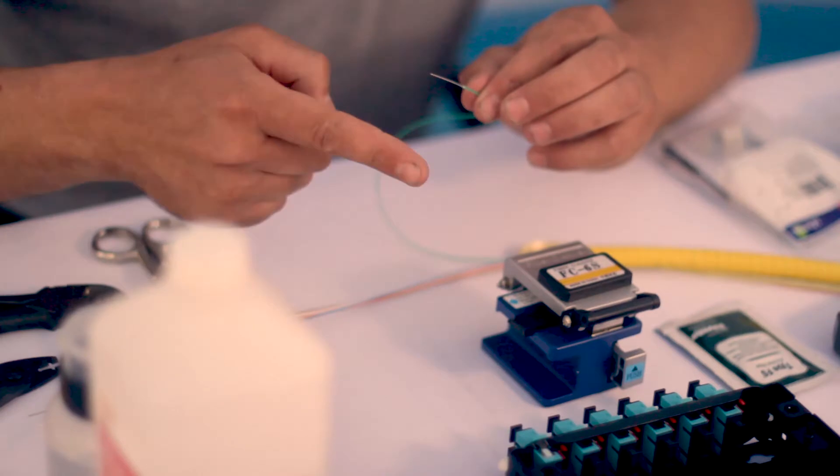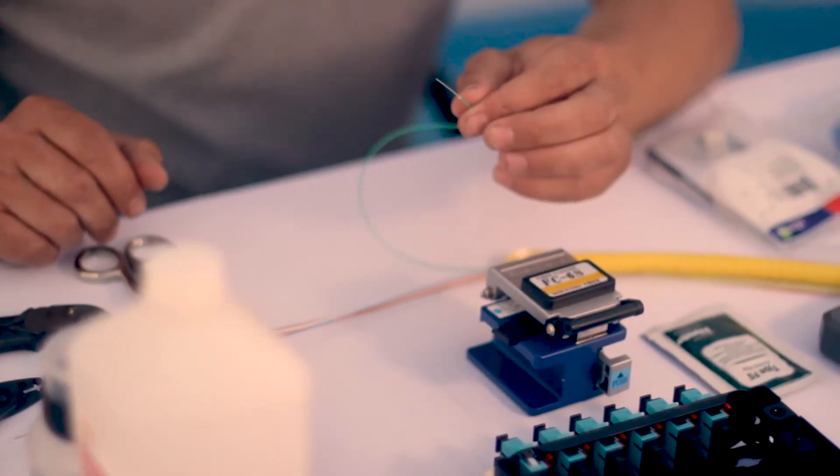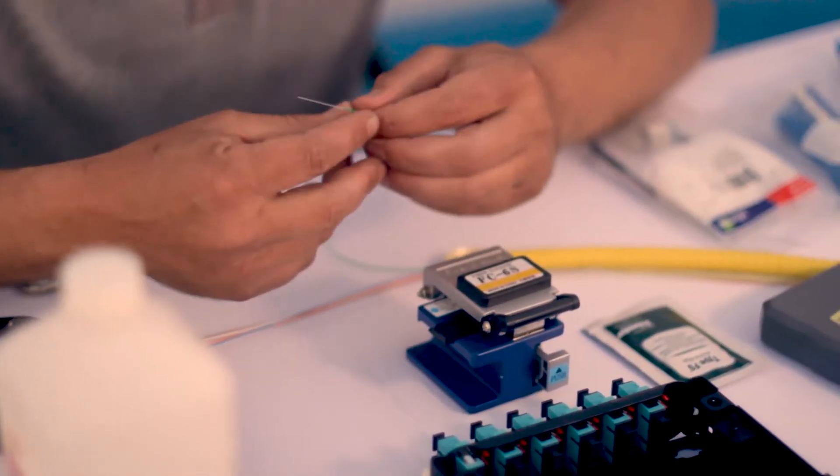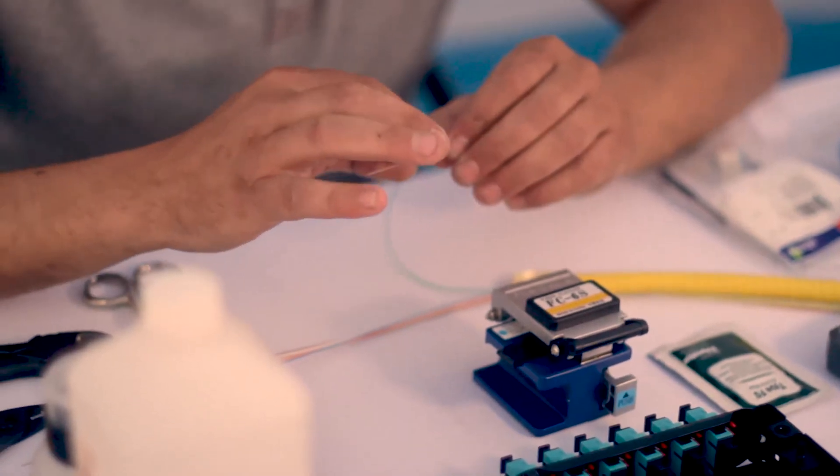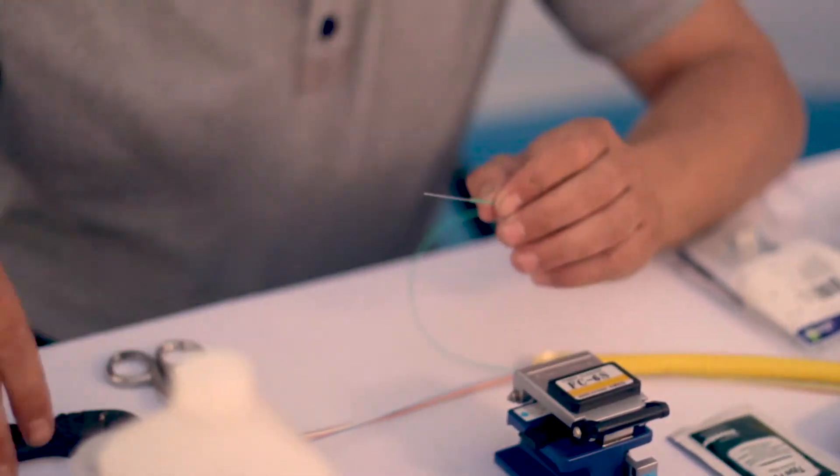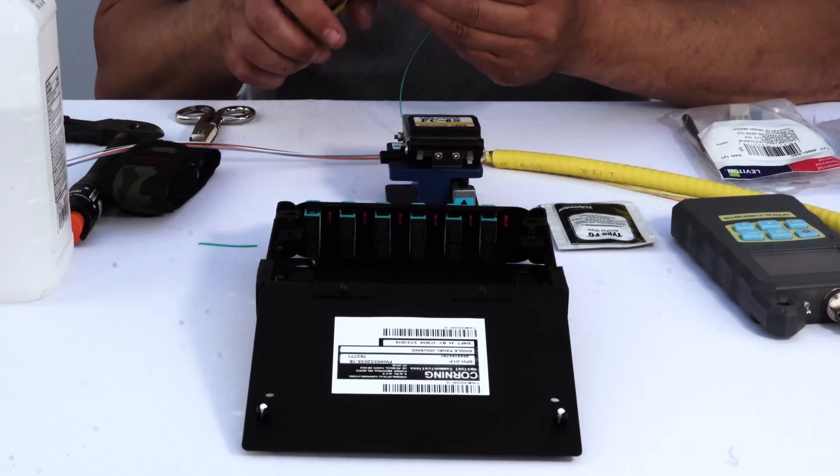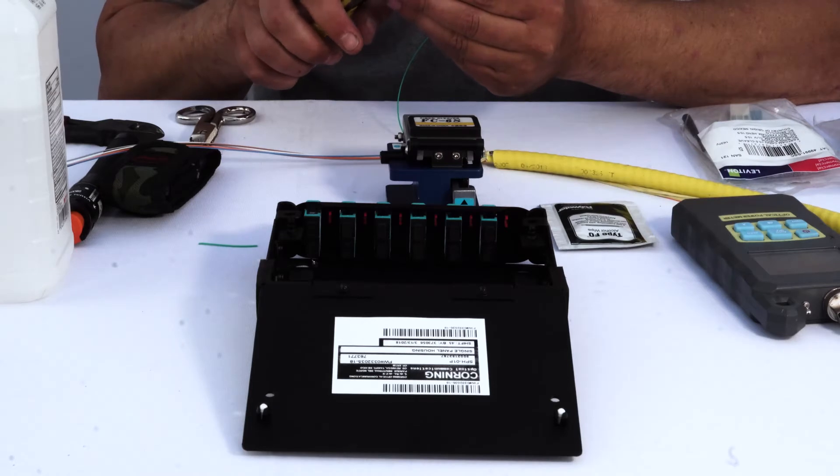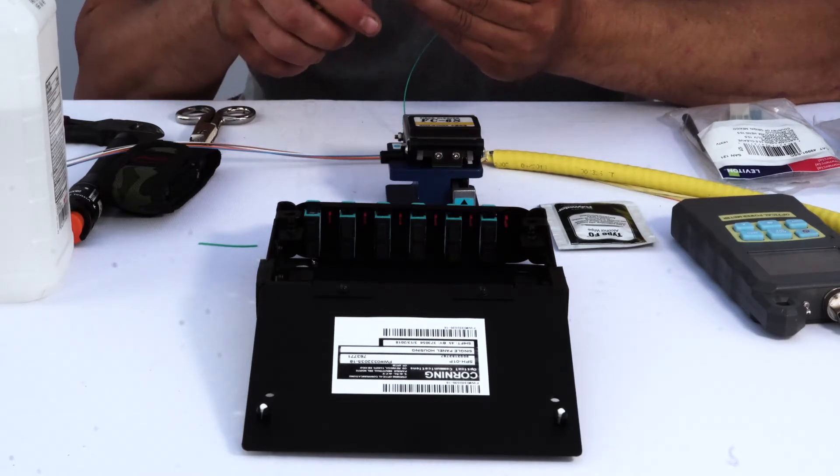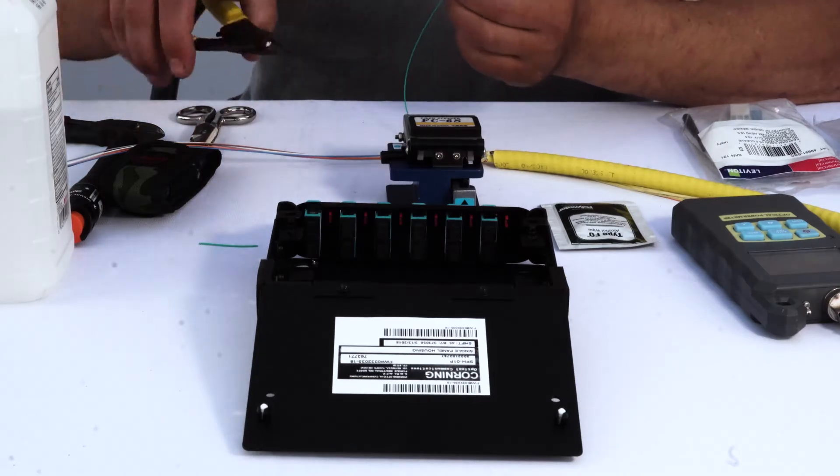Now we'll move on to removing our next layer, and we'll get right down to the actual fiber glass fiber. All right, we're just going to gently pull off that layer of glue.